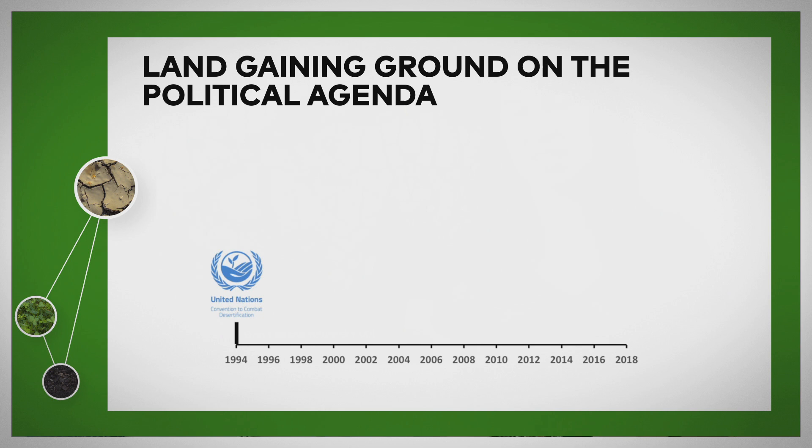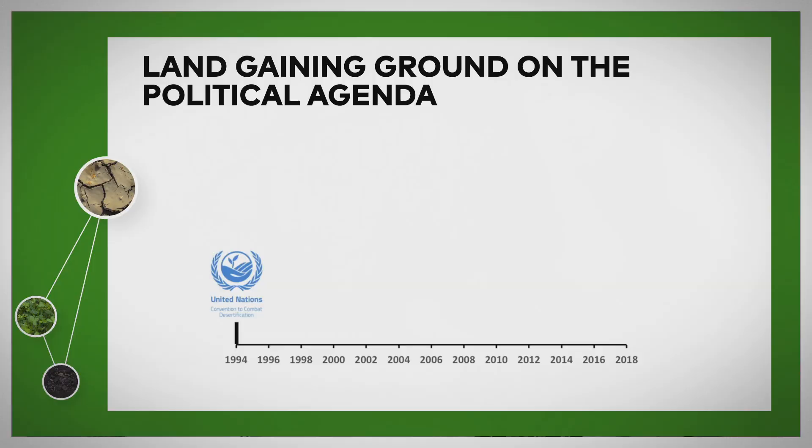The international political agenda is also moving things forward, and we can see that land has really gained ground on the political agenda since the 1990s. In 1994, a global agreement called the United Nations Convention to Combat Desertification was developed. This was pushed forward by countries particularly in Africa and the drylands parts of the world, where water is particularly scarce. These countries felt that land issues were being ignored, and that it was really affecting their ability to develop. The UNCCD now has hundreds of countries that have signed it, gaining wide support from all around the world. The next notable event came in 2005 when the Millennium Ecosystem Assessment was published, looking at the state of the world's ecosystems and what changes meant for people's ability to gain benefits from the land.